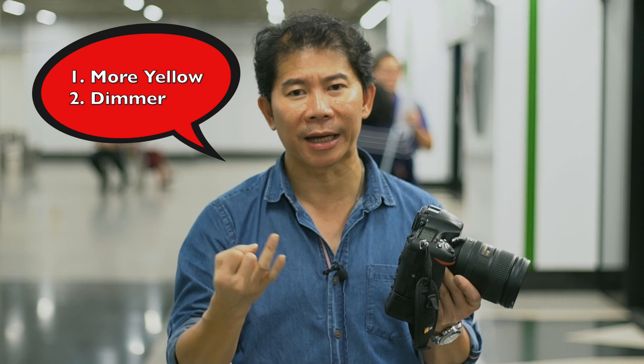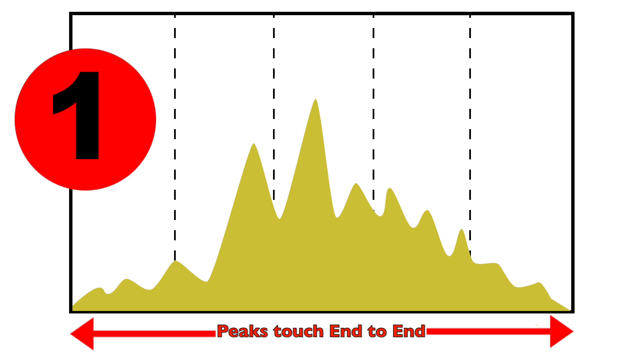That's how the screen ages. So what you need to do is look at your histogram. Number one, make sure that all the peaks are not cut off, like so. And make sure that there is no empty space on the left or on the right of the histogram.